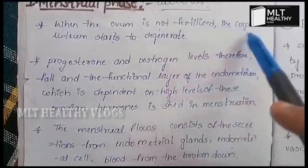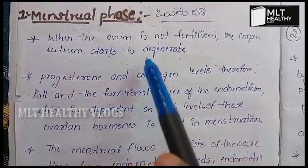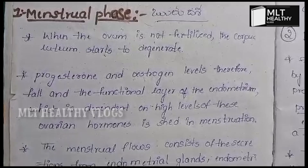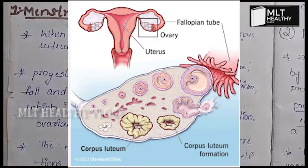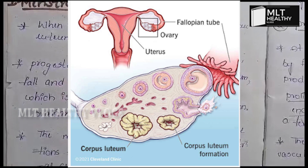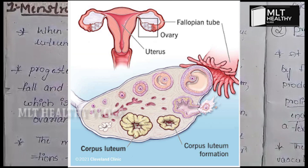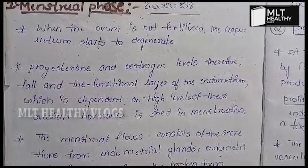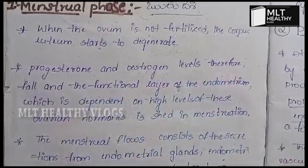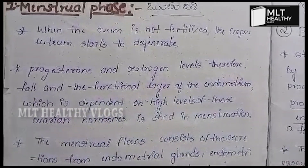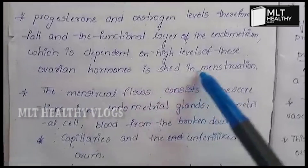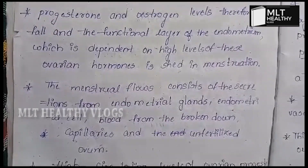In the first phase, the Menstrual Phase, the ovum is not fertilized. The corpus luteum starts to degenerate. Because the ovum released is not fertilized, the corpus luteum degenerates.